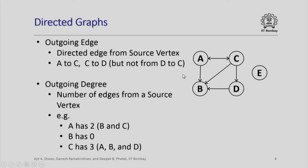In case of directed graphs, we have the notion of outgoing edge and outgoing degree and a corresponding notion of incoming edge and incoming degree. Let us look at the notion of outgoing edge first. An outgoing edge is defined as a directed edge from a source vertex. For example, there is an edge from A to C, there is an edge from C to D, but not from D to C.